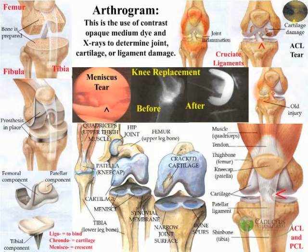You have the lateral and the medial collateral ligaments. They're on the outside of the knee joint, giving the knee stability to the right and left, as well as the cruciate ligaments, which give stability to the knee anteriorly and posteriorly.